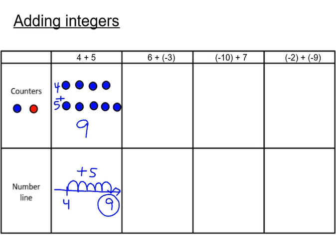Now what if you have 1 positive and 1 negative? So here we're going to have 6 positive. So we're going to have 6 blue and 3 negative. So 3 red. So if I want to represent this.